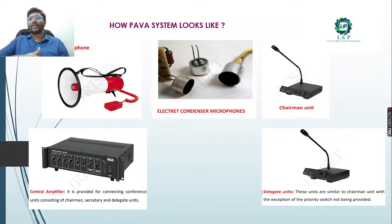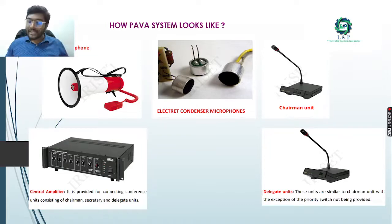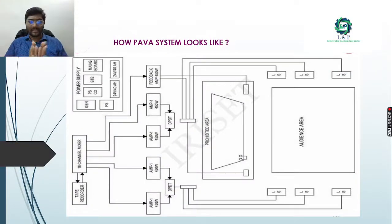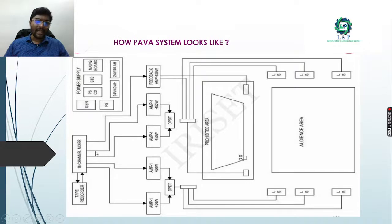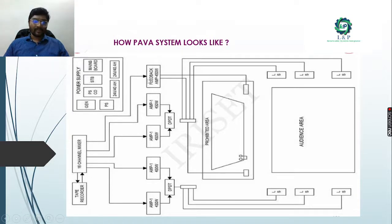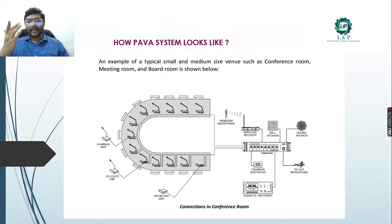With central amplifiers acting as slaves, we can connect multiple devices. The PAVA system looks like this: we have a power supply unit, different channel mixers used for making music clear and audible to everyone, pre-amplifiers, and different amplifiers with different wattages connected to the section channel mixer. From each end we have feedback amplifiers connected with the section channel mixer. For a conference room PAVA system example, we have many speakers, a chairman unit, and a delegate unit.